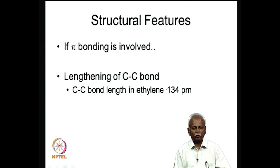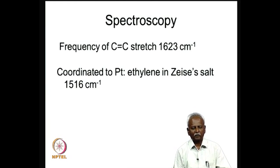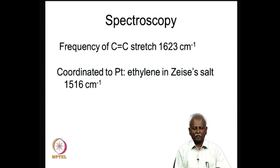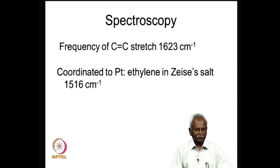The carbon-carbon bond length in ethylene is 134 pm (1.34 Å). When a complex is formed, the carbon-carbon bond length increases. The stretching frequency of the C=C double bond in free ethylene is 1623 cm⁻¹; when coordinated to platinum as in Zeiss's salt, it is reduced remarkably — by about 100 cm⁻¹. This is exactly the ballpark figure we obtained for carbon monoxide complexes: when CO interacts with a metal in the zero oxidation state, the metal puts electron density into the pi-star orbital; similarly here, the metal puts electron density into the pi-star orbital of the olefin.